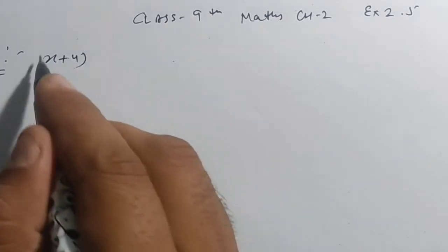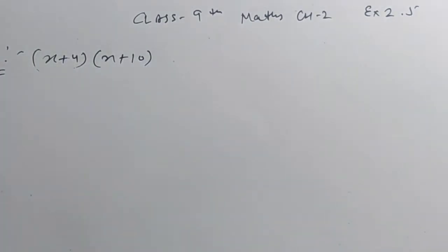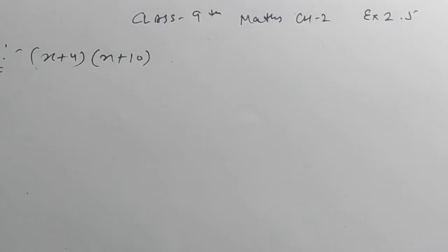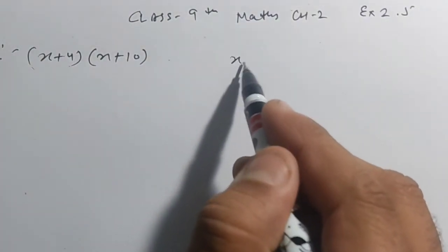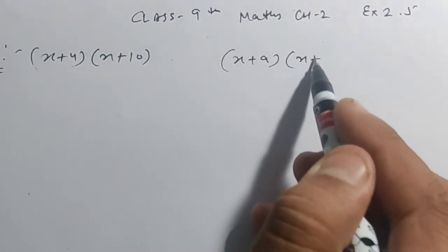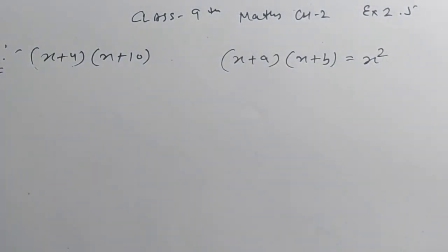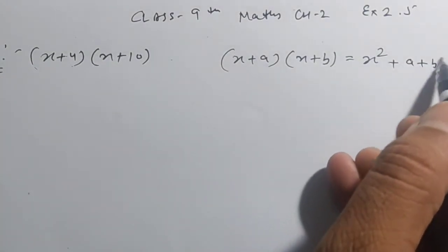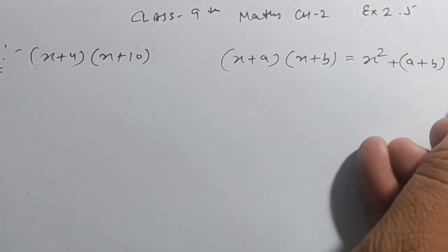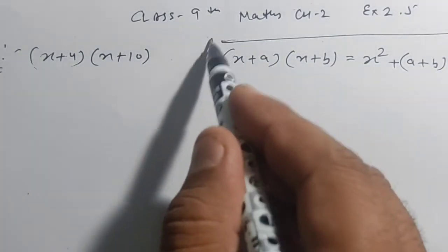(x + 4)(x + 10). एक identity है आपके पास — identity है: (x + a)(x + b) = x² + (a + b)x + ab. यह identity आपके book में identity number 4 पे दी रखी है।